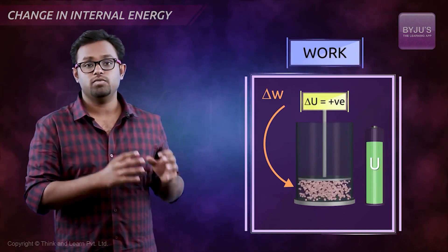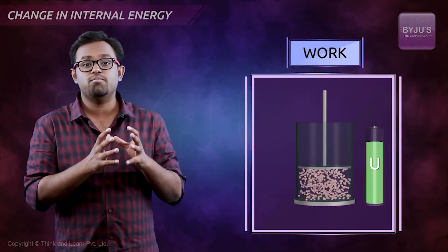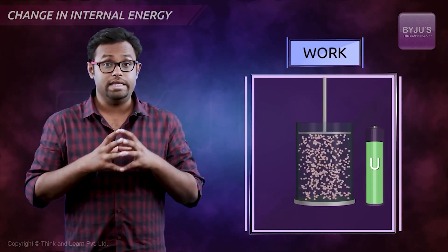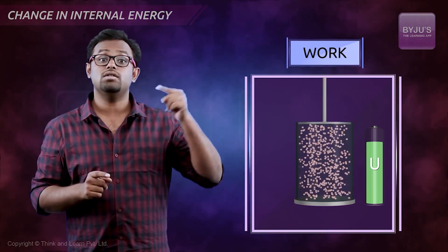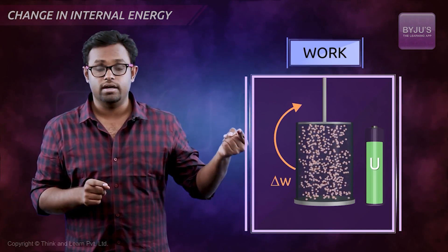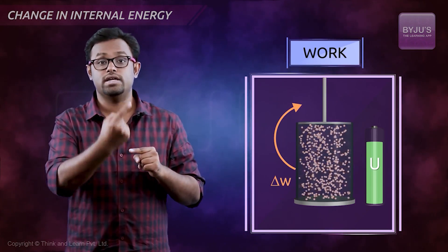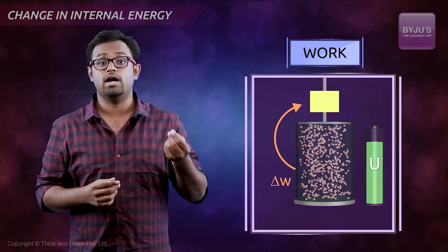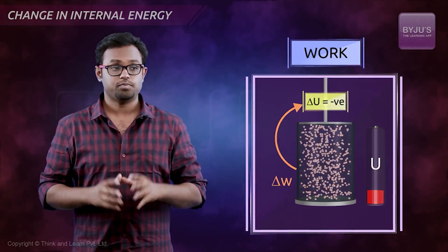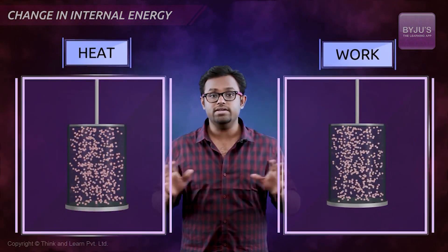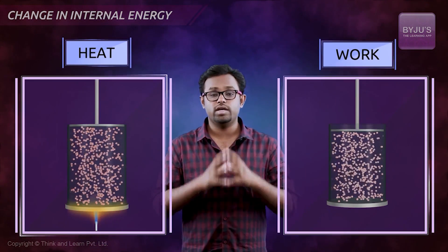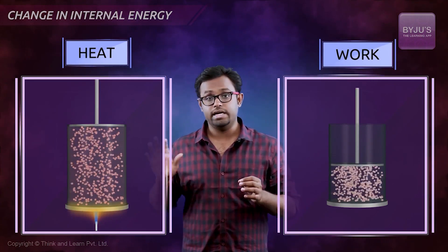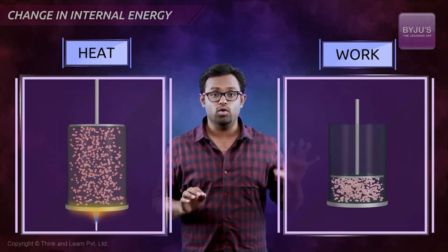It can also happen that the system itself pushes the piston out, and if that happens then the system is doing work on the surrounding — that is, it is losing its energy, and the internal energy would come down. So these are the two modes of changing the internal energy of the system: heat and work.